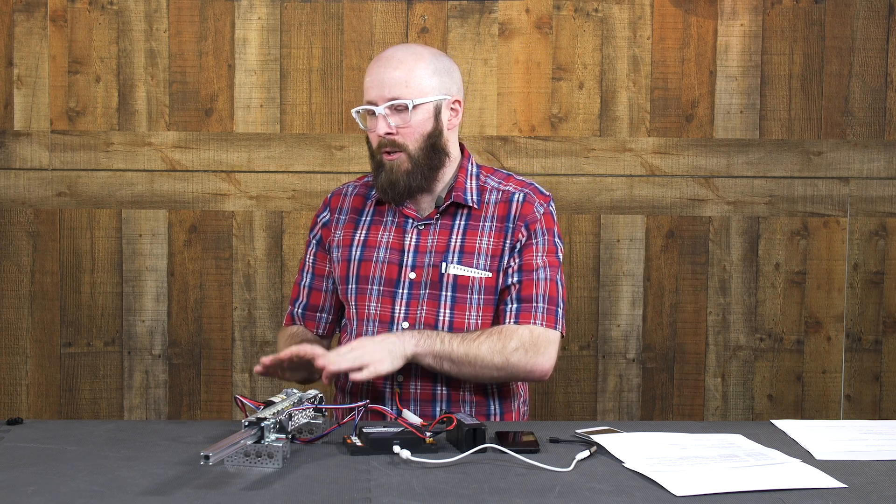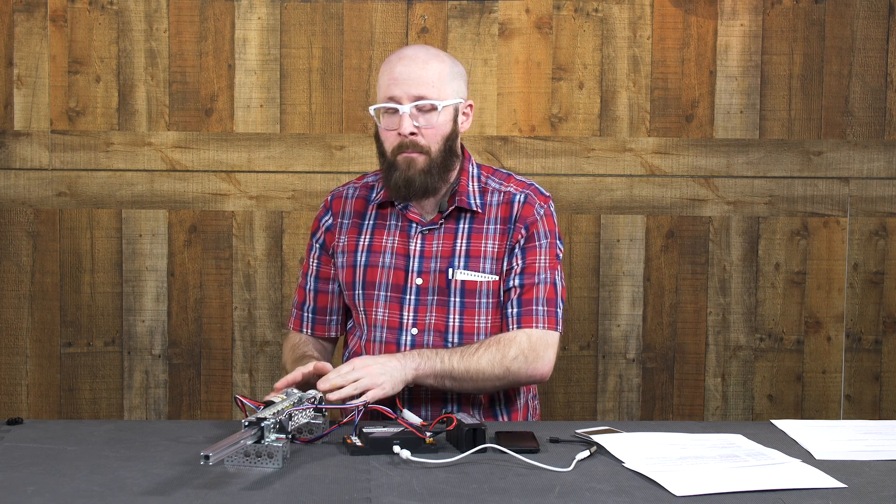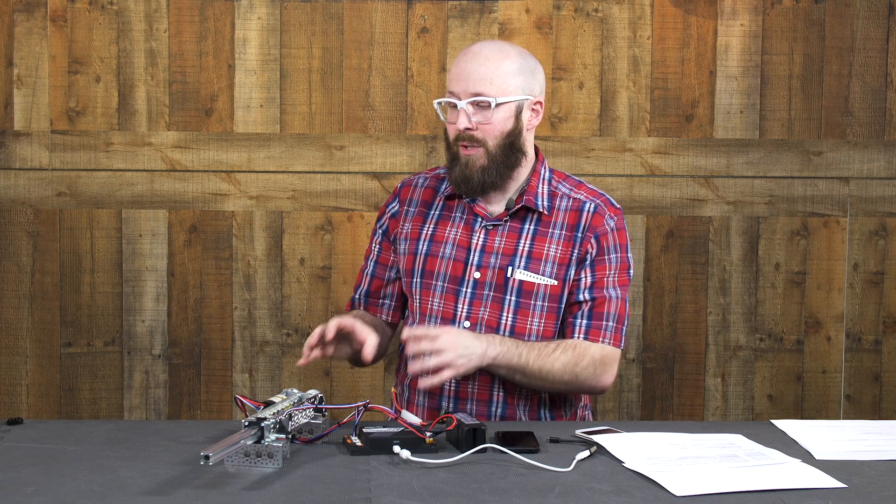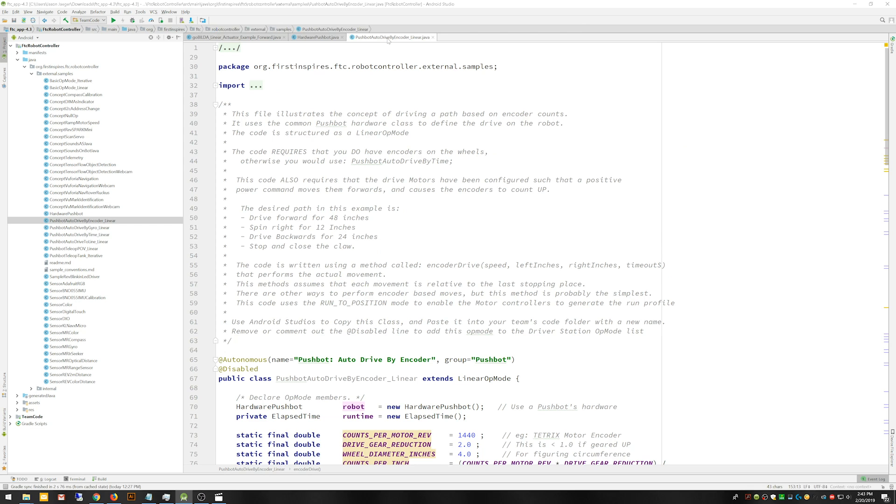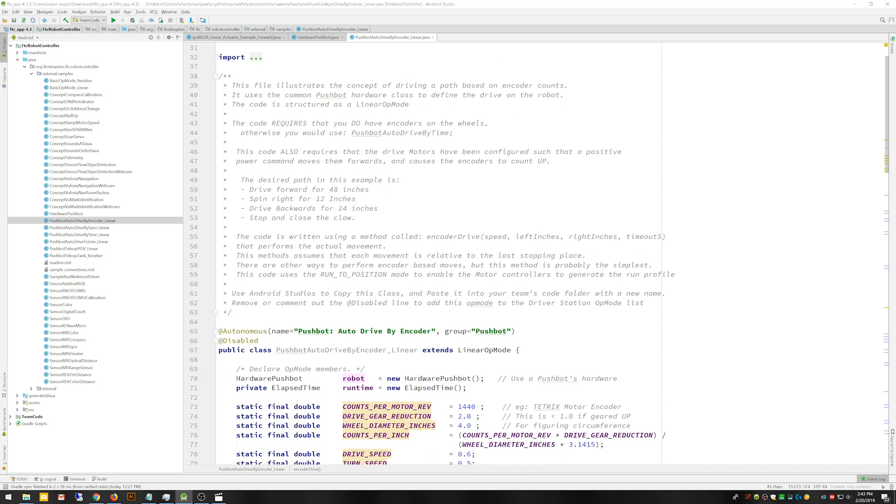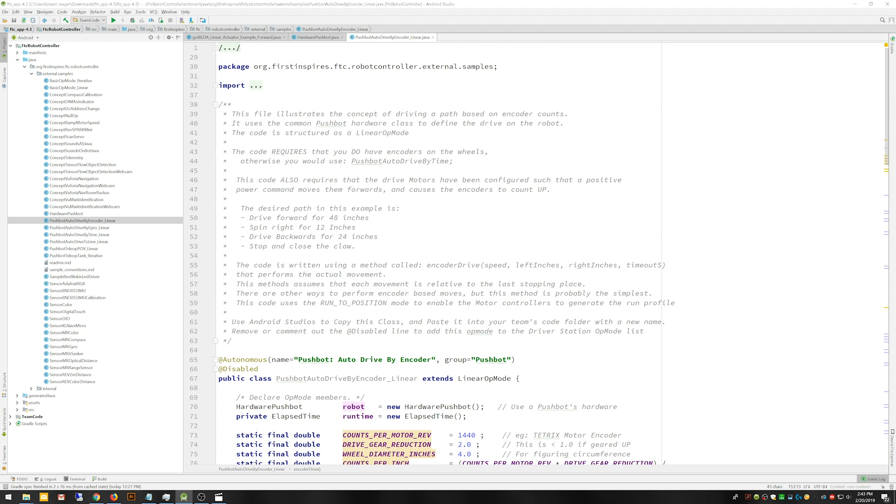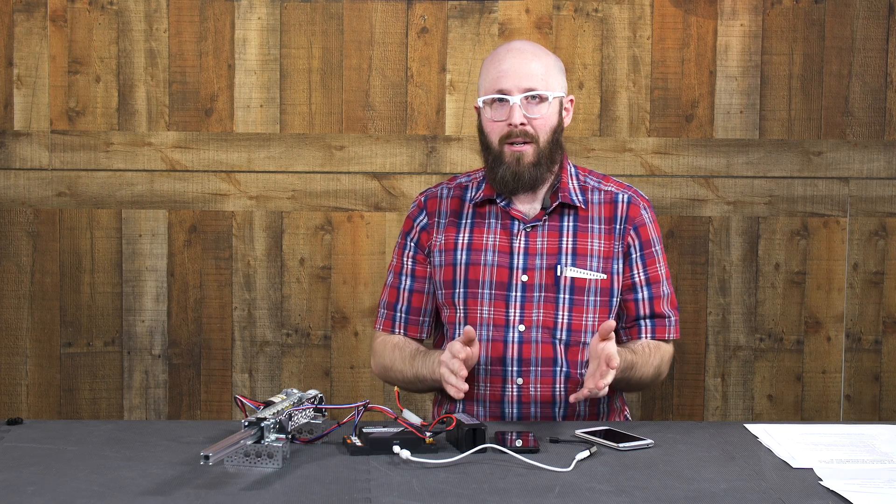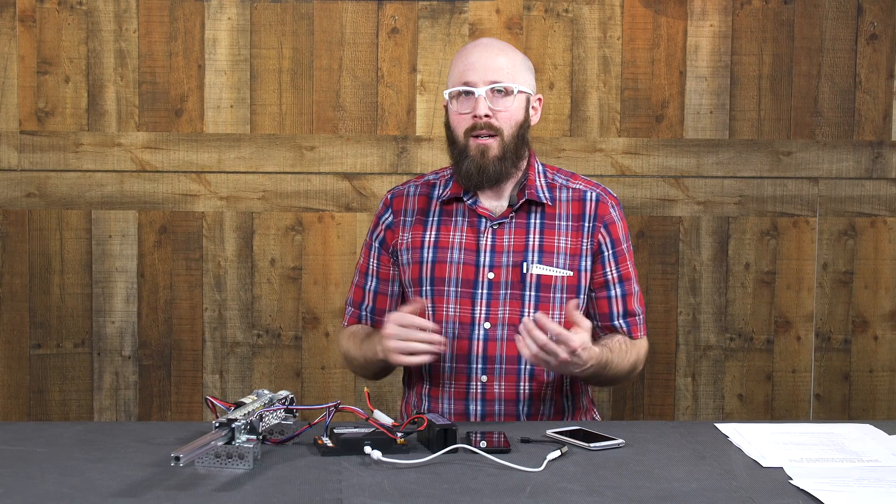And yeah, you could go ahead and use this running just off the encoder without those sensors, or just with those without the encoder. But ultimately, I think you're best served by using those together. So if this is all fairly new to you, I definitely want you to check out an example that they provide with the SDK. It's called pushbot auto drive by encoder underscore linear. And that's going to be a great resource to look at and see how they're using it there. And while the purpose of that example is to show you how to use your encoder when you're driving your robot around, the same principles would apply to using it for an actuator or for a cascading kit or anything else.